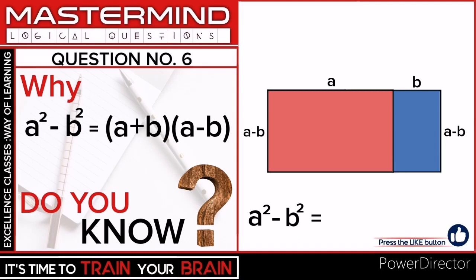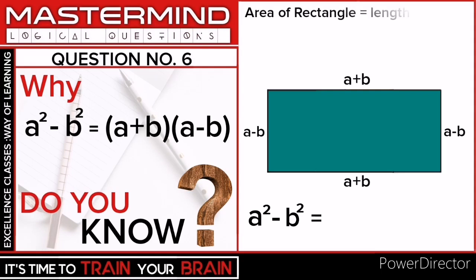Now we have to find the area of this rectangle. Length of this rectangle is a plus b, and breadth is a minus b.